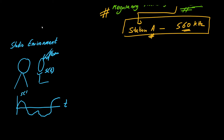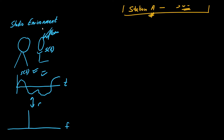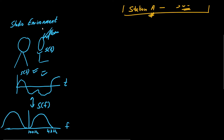S(T) may have this kind of a waveform. Now if we take the Fourier transform of this signal, we will get the spectrum of our audio signal. Let us call that spectrum S(F). That spectrum usually starts from around 20 to 100 Hz and goes up to 4 kHz.